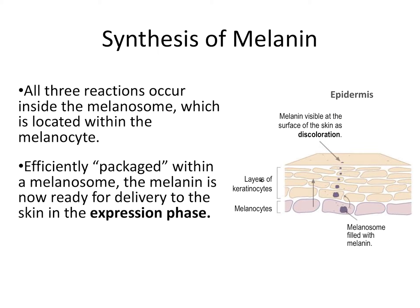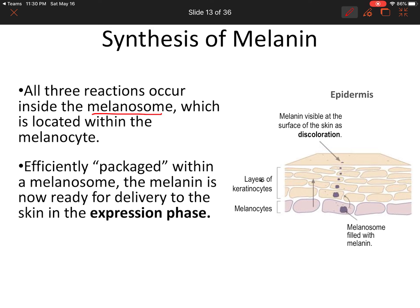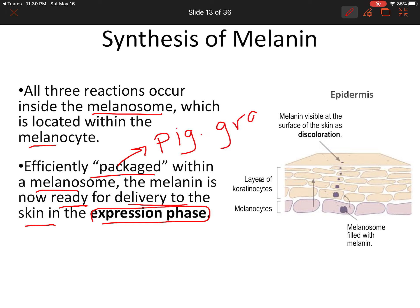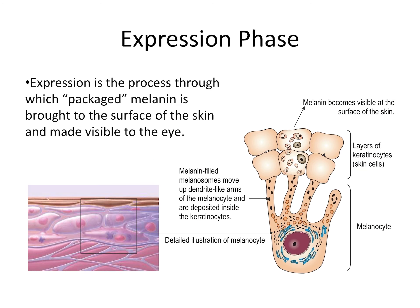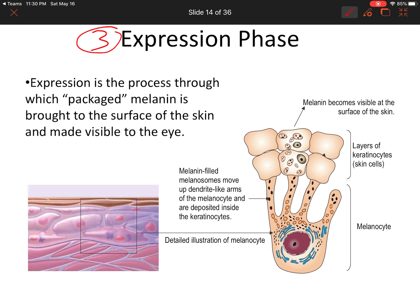All three reactions occur inside the melanosome, which is the aggregation of enzymes located within the melanocytes. Once the melanosome is fully packed with melanin, it becomes a pigment granule. This is now ready to be delivered to the skin in the expression phase. The expression phase is the process through which packaged melanin is brought to the surface of the skin to be seen by the naked eye.